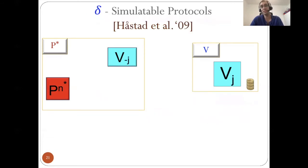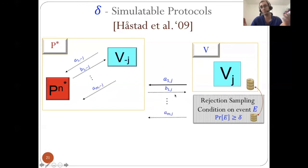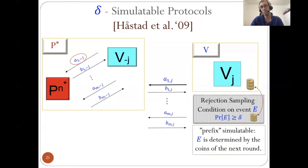We generalize this property to partially simulatable protocols: given the message of the verifier, there is some event over the random coins of the verifier with probability delta, such that if we condition on this event, we can emulate the verifier till the end. For example, the event is aborting in the next round. A special case we call prefix simulatable protocols, in which the event is determined by the coins of the next round, like random termination.